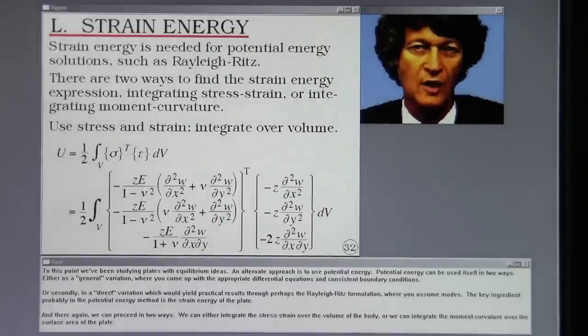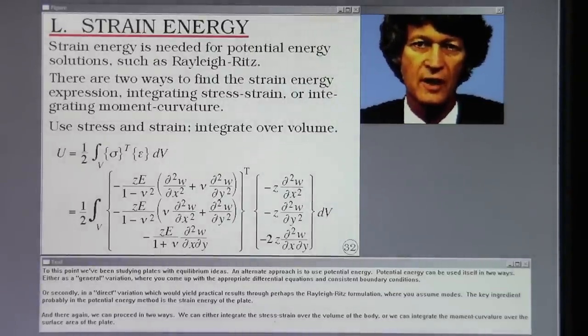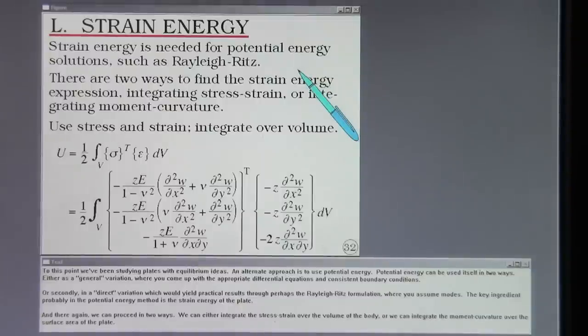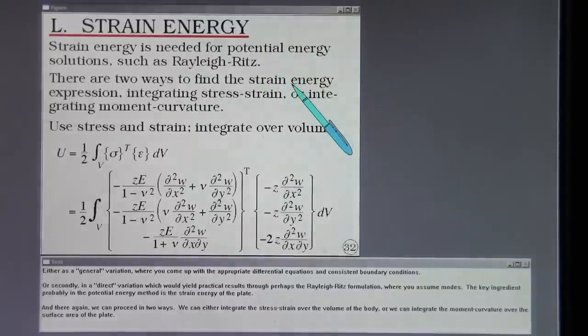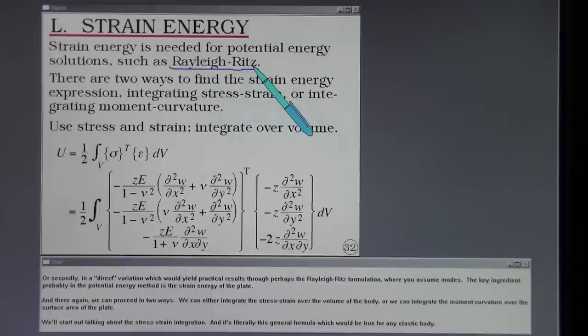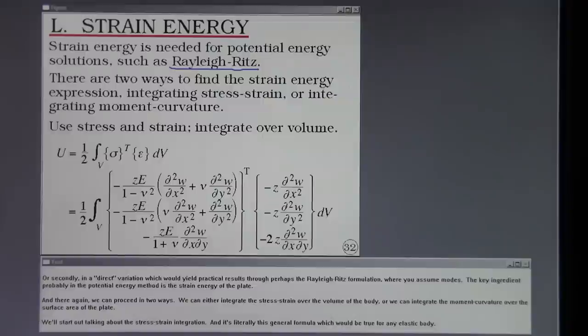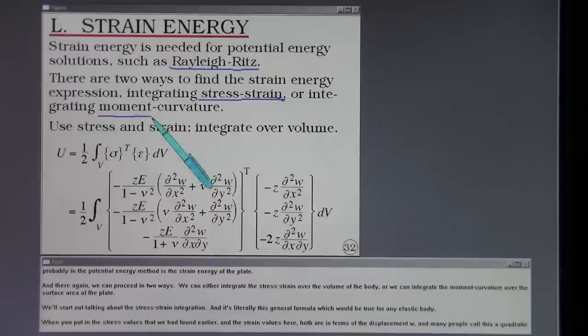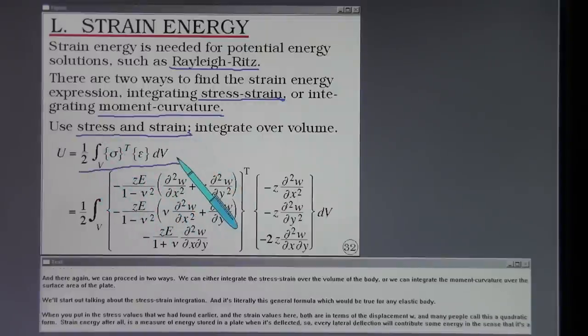To this point we've been studying plates with equilibrium ideas. An alternate approach is to use potential energy. Potential energy can be used itself in two ways. Either as a general variation where you come up with the appropriate differential equations and consistent boundary conditions. Or secondly, in a direct variation which would yield practical results through perhaps the Rayleigh-Ritz formulation where you assume modes. The key ingredient probably in the potential energy method is the stress-strain energy of the plate. And there again we can proceed in two ways. We can either integrate the stress-strain over the volume of the body or we can integrate the moment curvature over the surface area of the plate.